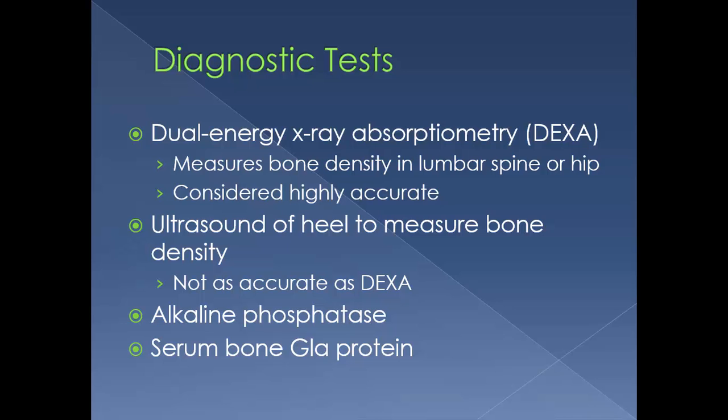Diagnostic tests include a dual energy X-ray absorptiometry, also known as a DEXA scan. This measures bone density in the lumbar spine or hip and is considered highly accurate. An ultrasound of the heel can also measure bone density — it is a one-minute scan, not as accurate as a DEXA scan, but accurate enough for screening purposes.